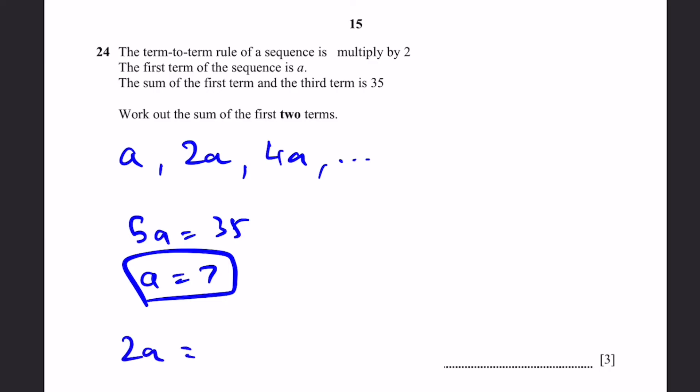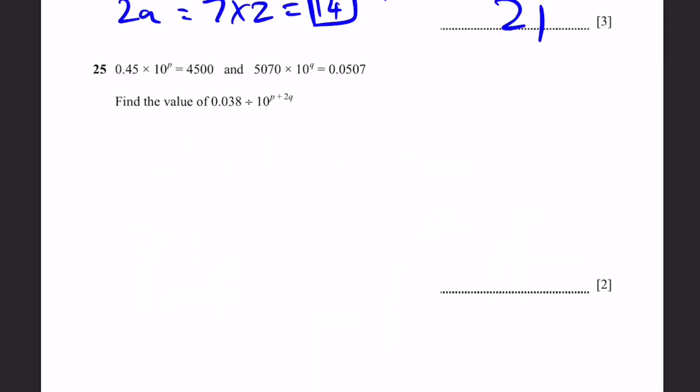Now the second term, 2a is going to be 7 times 2, because a equals 7. So 2a is 14. Now the sum of the first two terms is a plus 2a, which is 7 plus 14. And that's equal to 21. That's the answer.